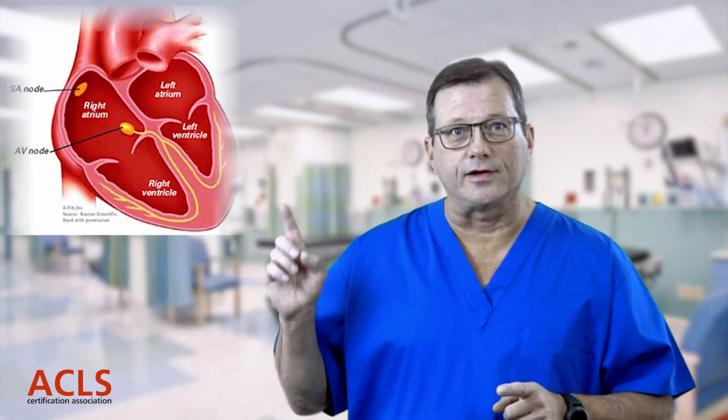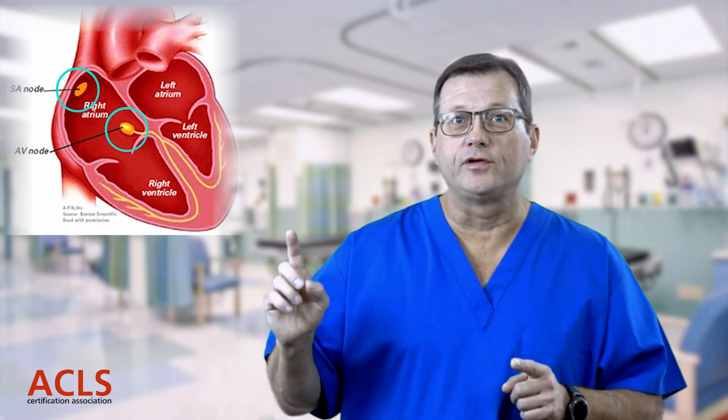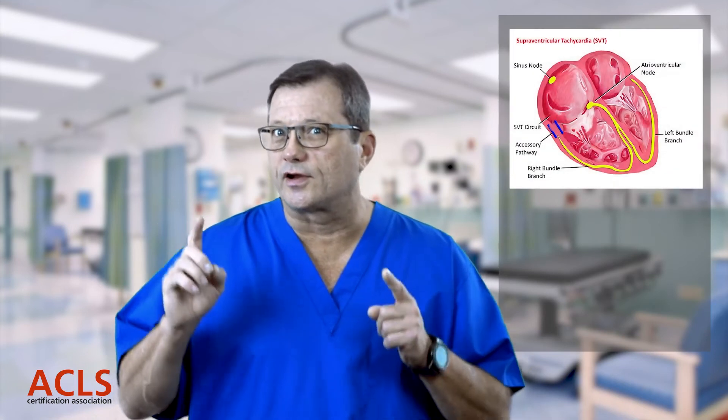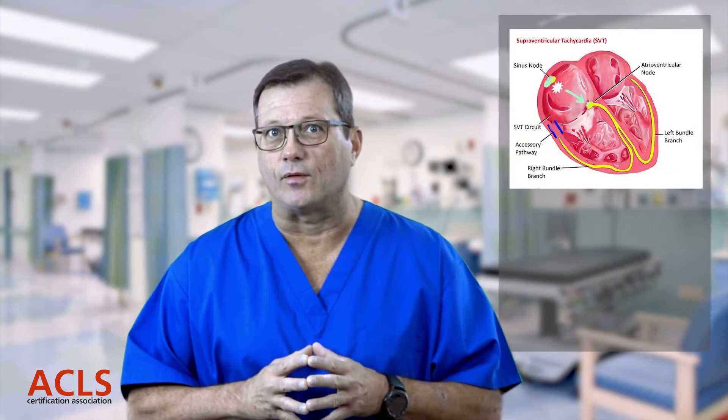The areas of the heart that atropine will impact are the SA node and the AV node. It increases output from the SA node — increases firing — and it also increases conduction through the AV node.